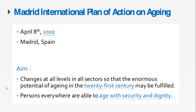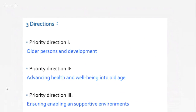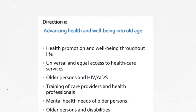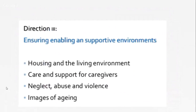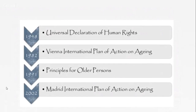The Madrid Plan also states that people everywhere should be able to age with security and dignity. It points out three directions, with direction two being most relevant to medical students: 'Advancing health and well-being into old age,' which includes health promotion, universal health care, older people with HIV and AIDS, care providers, mental health, and older people with disabilities. Direction three is also included. These four UN actions give a brief history of what the UN has done on the topic of aging.